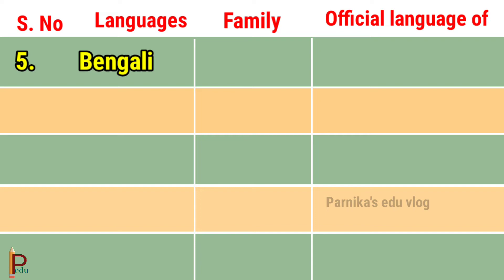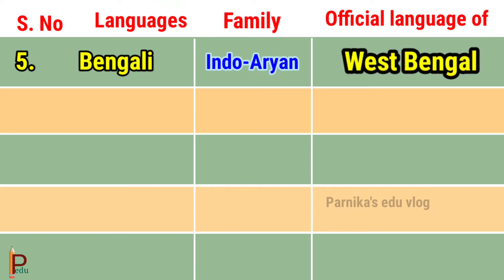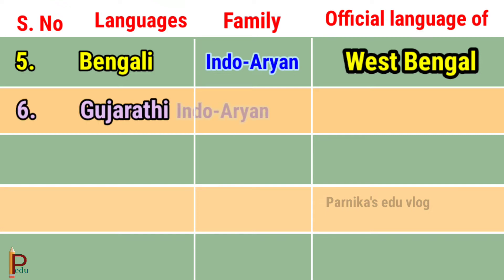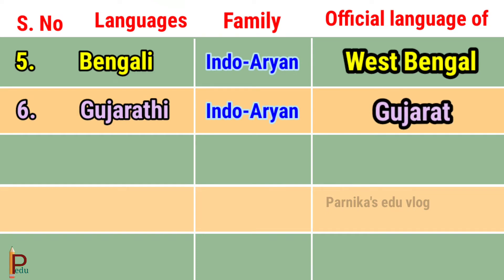Language Bengali belongs to the Indo-Orient family and is the official language of West Bengal. Language Gujarati belongs to the Indo-Orient family and is the official language of Gujarat.